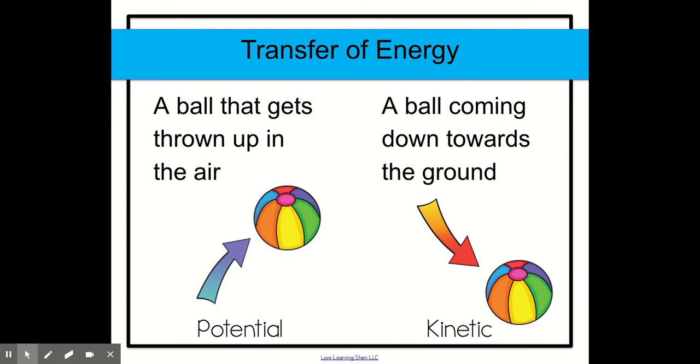Here's an example of a transfer of energy. A ball that gets thrown up in the air has potential energy because it's moving up against gravity and then the ball comes down towards the ground. That's when it has kinetic. So the ball had potential energy but then when it came down the potential energy transferred into kinetic energy.